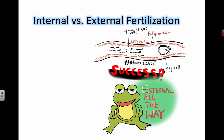There are advantages and disadvantages to both. If you can try to figure out what humans are doing — I've drawn a little picture here that is showing you something that is definitely not to scale. You have sperm cells in here traveling through the fallopian tube trying to find the egg cells. So this is internal fertilization. Humans do internal fertilization.